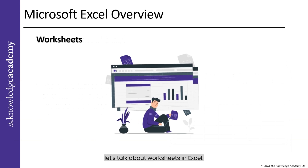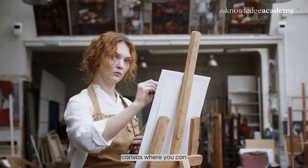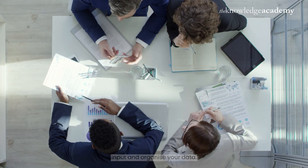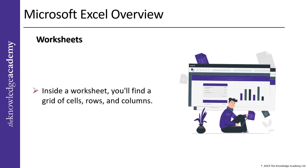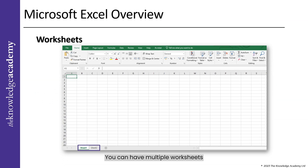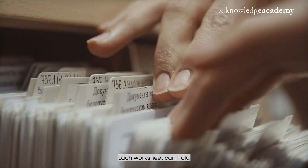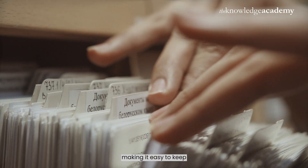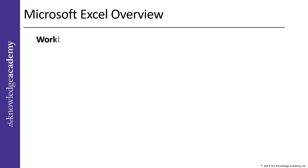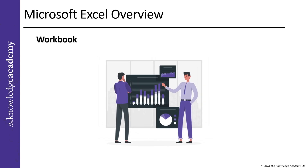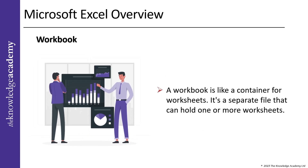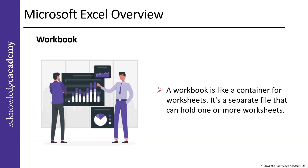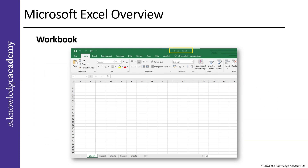Moving on, let's talk about worksheets in Excel. A worksheet is like a canvas where you can input and organize your data. Inside a worksheet, you'll find a grid of cells, rows, and columns. You can have multiple worksheets within the same Excel file, and each worksheet can hold different sets of data, making it easy to keep your work organized. A workbook is like a container for your worksheets — a separate file that can hold one or more worksheets, like a folder that houses your various worksheets.